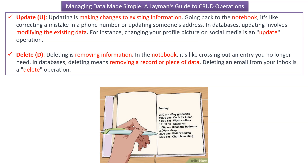The fourth one is delete. Deleting is removing information. In the notebook analogy, it is like crossing out an entry you no longer need. In databases, deleting means removing a record or piece of data. Deleting an email from your inbox is a delete operation.